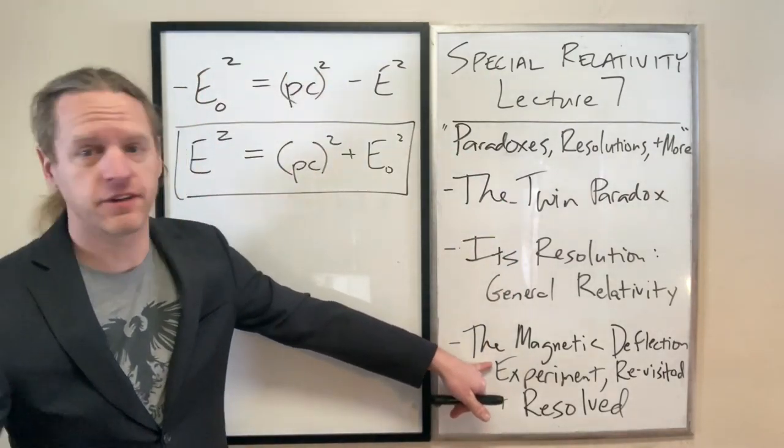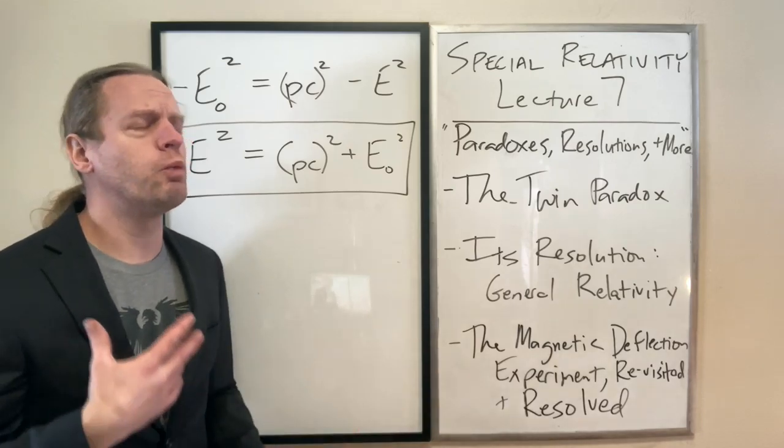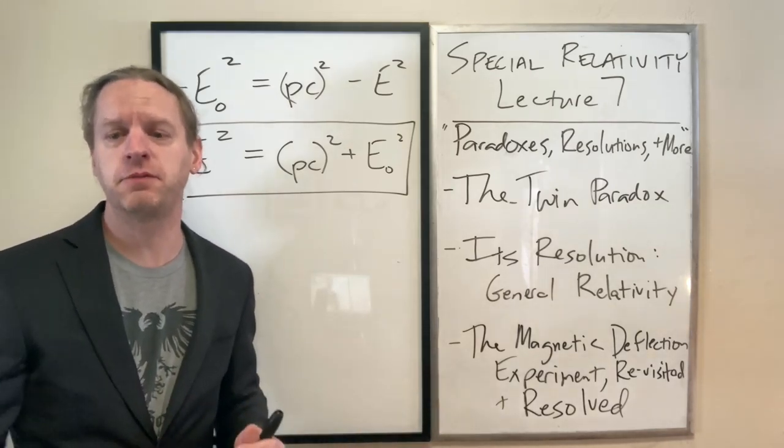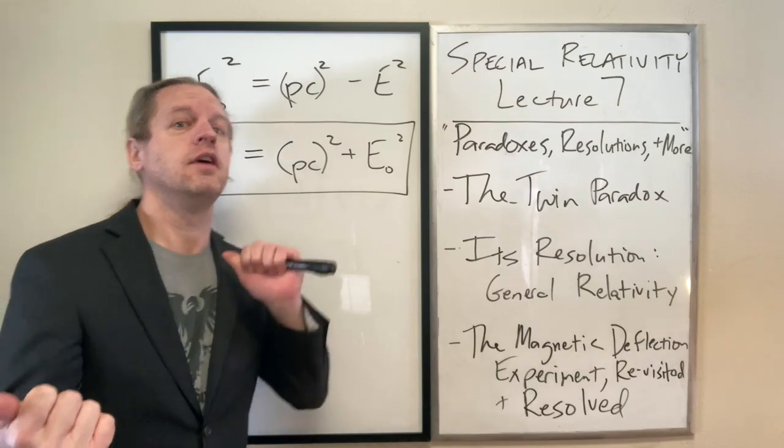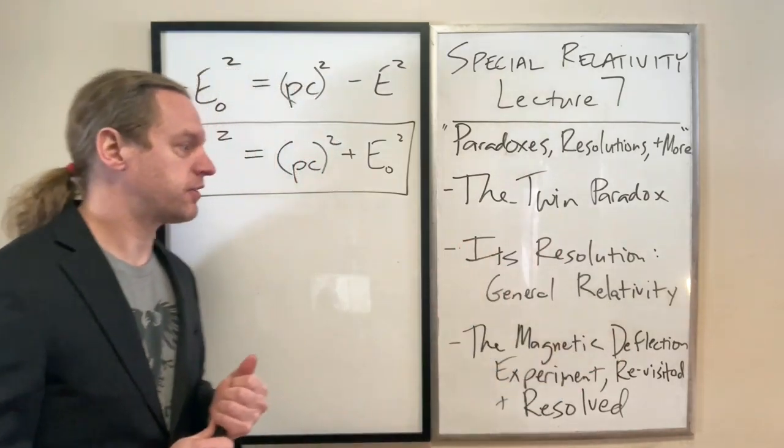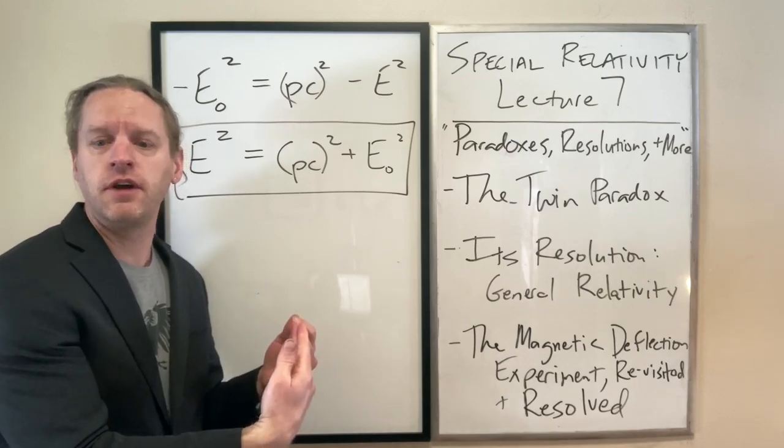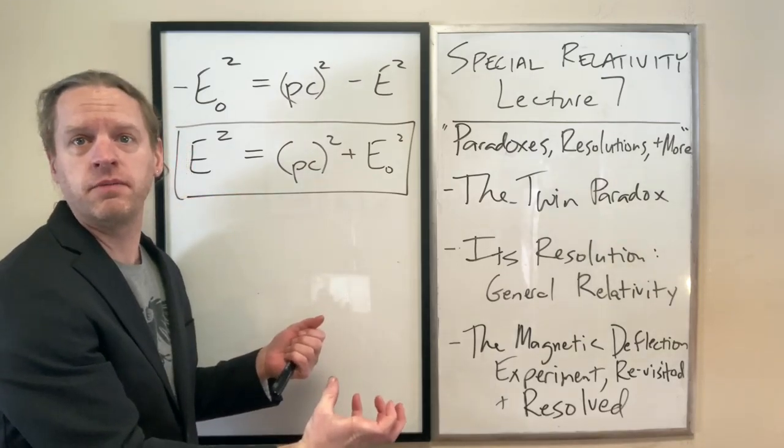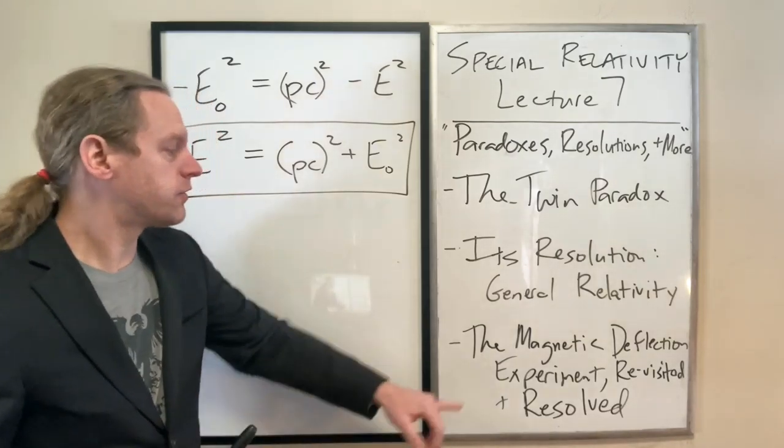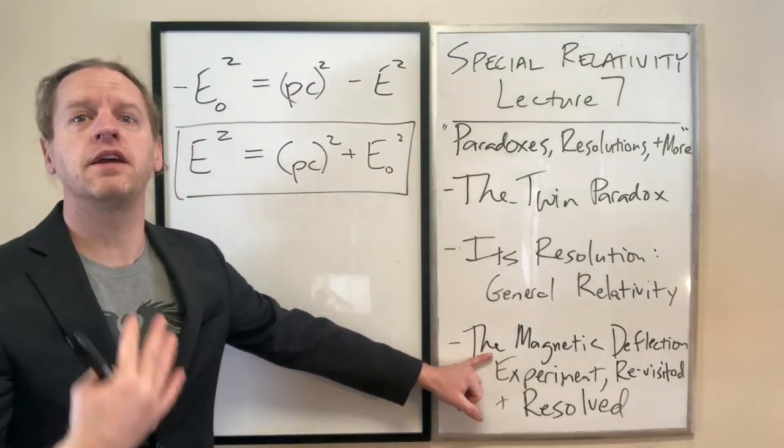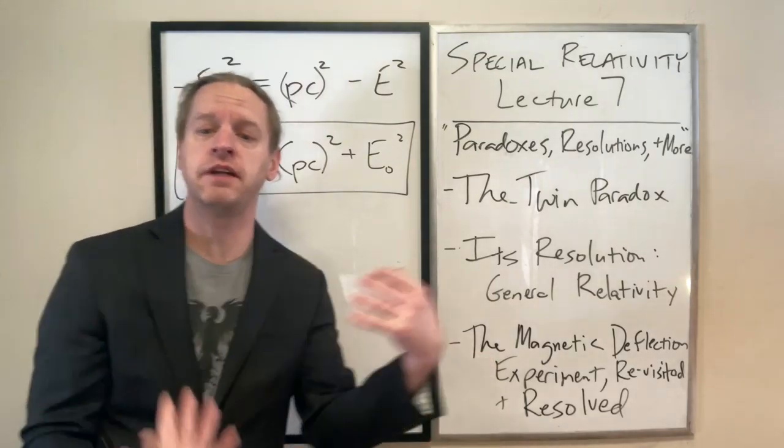And then the last thing I want to talk about is one of the basic fundamental disagreements between Galilean or Newtonian and Einsteinian mechanics was the fact that if you try to apply Galilean transformations to electromagnetism, it no longer works. So we're going to revisit that problem, and we're going to explain exactly how relativity solves it.